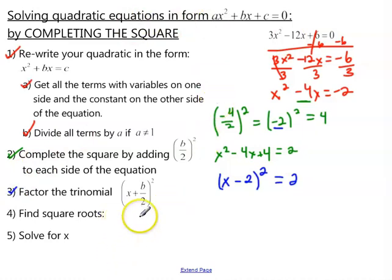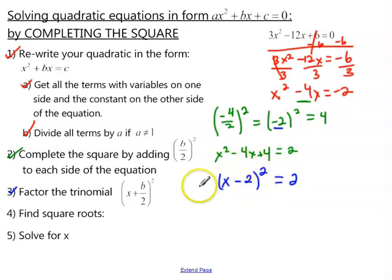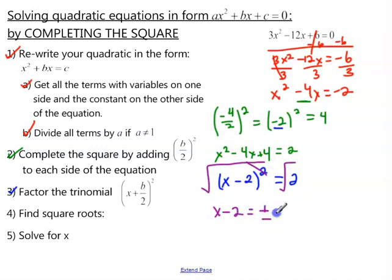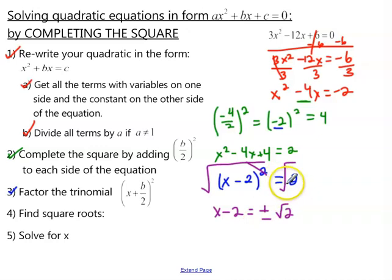Then we move on to step 4: finding the square root of each side. This goes back to the method of solving by the square root. Since the squared term is isolated, we can take the square root of both sides. These cancel out, so we're left with x minus 2 equals plus or minus the square root of 2. Whenever you take the square root of a number, you always have a positive and a negative answer. Since 2 is not a perfect square, do not change it to a decimal — leave it as square root of 2.